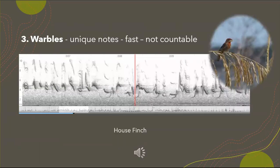Warbles are unique notes — they're fast and pretty much uncountable. Sometimes a bird doing a warble might sing it a little slower so it could be slightly subjective, but in general they should not be countable. Examples of birds that sing warbles are house finch, purple finch, warbling vireo, and blue-headed grosbeak. I'm going to play this warble from the house finch — you can try to count it for fun.